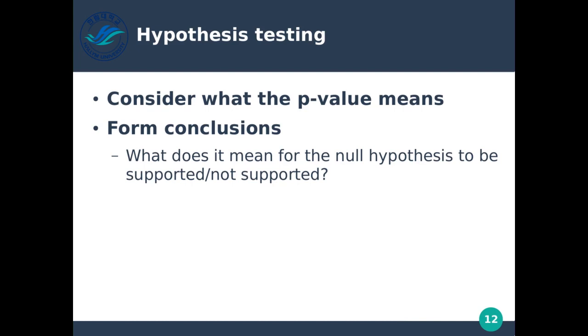Consider what the p-value means and make sure you form your conclusions carefully. One of the biggest problems people have is forming a proper hypothesis. If you don't understand what it means for the null hypothesis to be rejected or not rejected, you could form incorrect conclusions even though the rest of your study is correct. Be very careful about how you form conclusions. That's it for hypothesis testing with single samples — next we'll talk about hypothesis testing with multiple samples. Thank you very much.